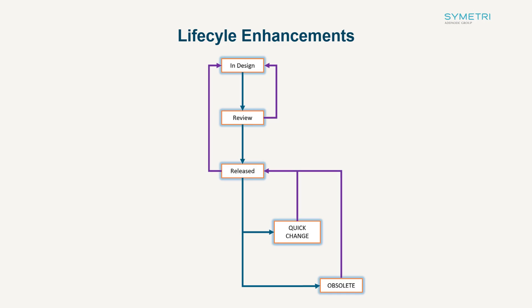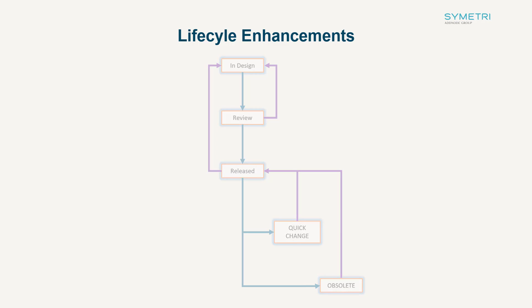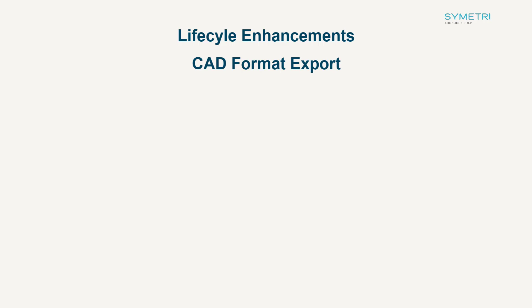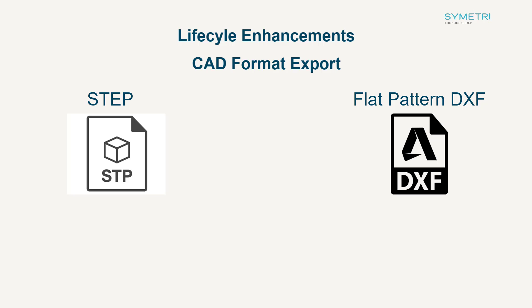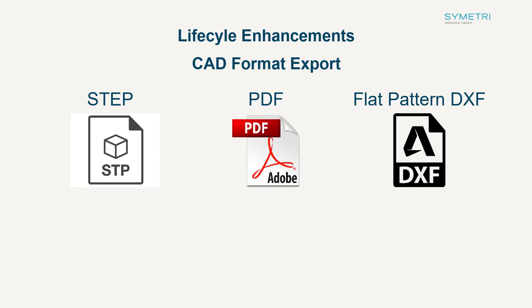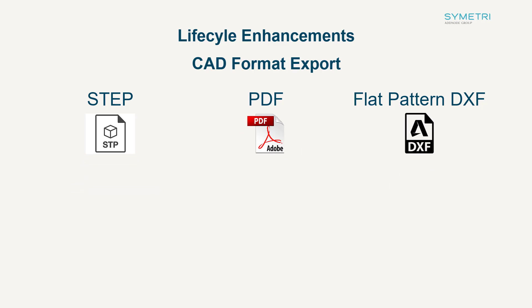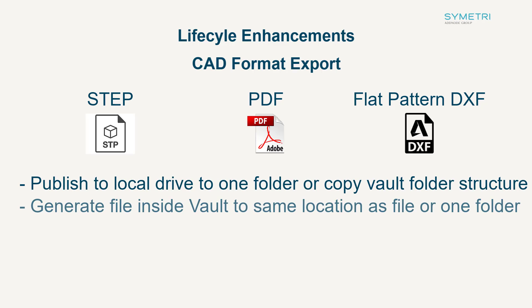Moving into some of the administration changes, lifecycles have had some additional features implemented. These will need to be configured prior to use but give some added benefit to the automation process. Extra options for different file formats have been added so that during state change, you are now able to automate file generation to STEP and flat pattern DXF files, as well as the previously built-in PDF functionality. These new formats work exactly the same as the PDF function, in which you are able to generate them outside of the vault to a specific location or inside the vault to the same location of the file or to a designated folder.